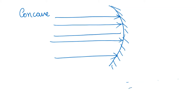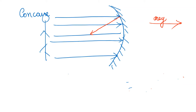Light travels in straight lines. If you look at the light rays, the mirror will reflect them. The light will bounce off the mirror. If you look at the rays of light, the angle will reflect on the mirror. If you look at the mirror, the reflected rays converge at a focus point.